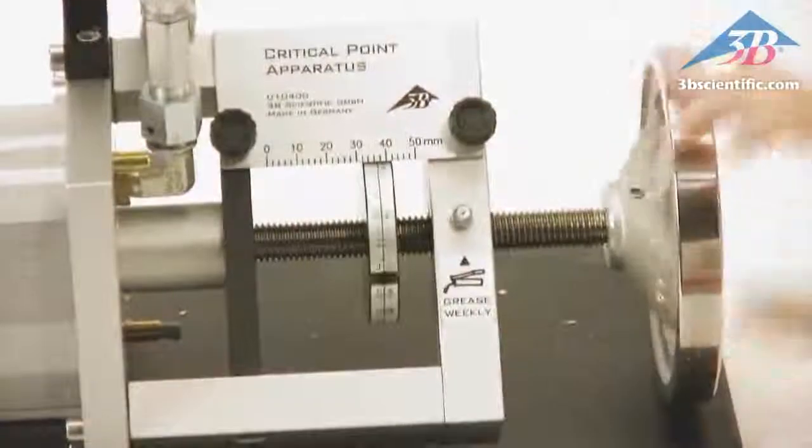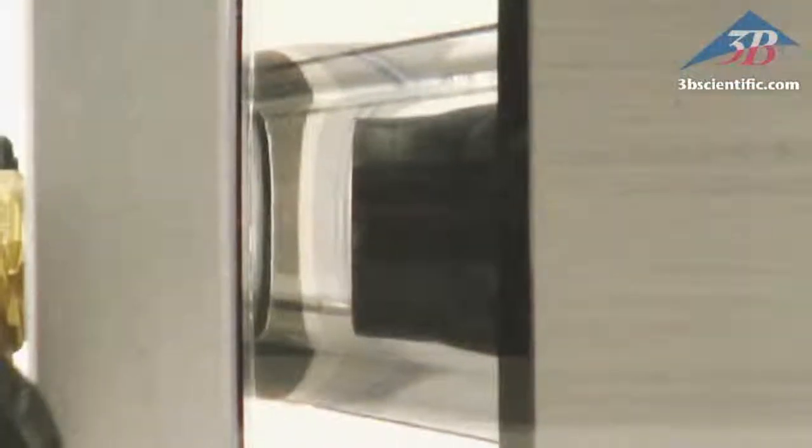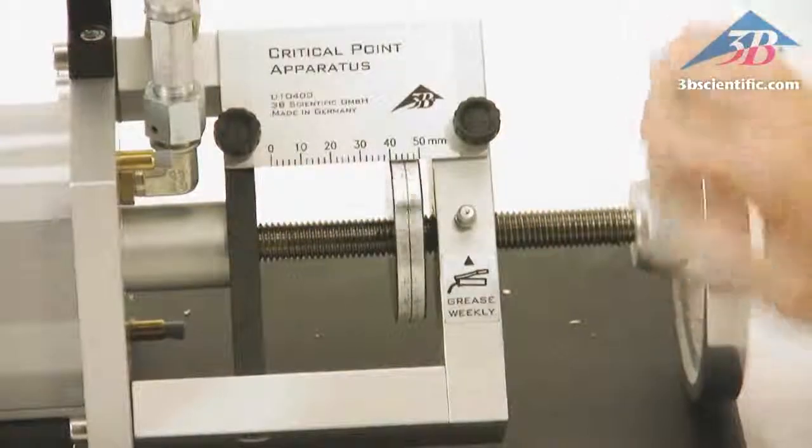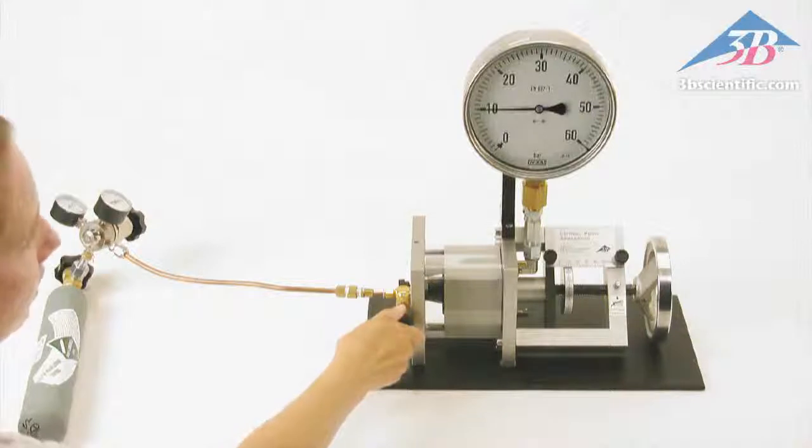Close the regulating valve and begin increasing the volume of the cell via the hand wheel to the 46 millimeter mark. Open the valve again until a maximum pressure of 10 bar has been attained and close the valve.